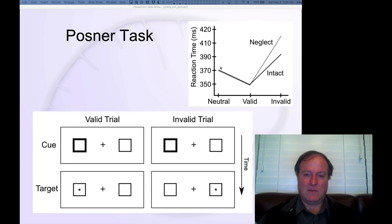And what you see is that compared to a neutral condition where there is no drawing of attention to one side of space, that validly cued trial results in about a 20 millisecond improvement in speed in detecting the target.